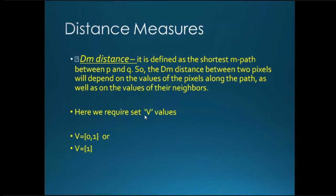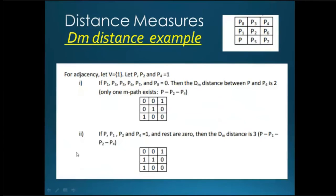Then we have Dm distance. Dm distance, for example, if we see in the Euclidean distance, D4, D8 distance, there is no need of a v value. Set v is not required in that. There is no need of similarity pixels values. But Dm distance, we need similarity pixel values. v value is necessary. So what is Dm this? For example, we are taken here.